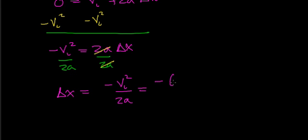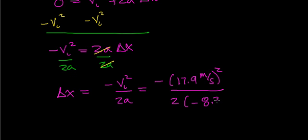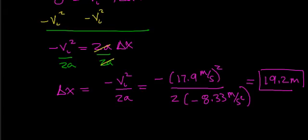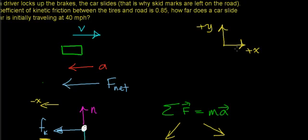Substituting the values: Δx = −(17.9 m/s)² divided by (2 times −8.33 m/s²), which gives 19.2 meters. This car travels 19.2 meters while skidding to a stop. The positive result is consistent with our coordinate system since the car was traveling in the positive x direction. In the next video, we'll look at what happens when the car pumps its brakes instead of locking them up.